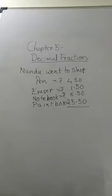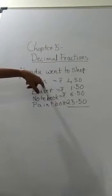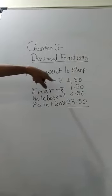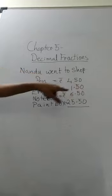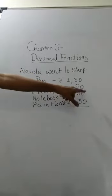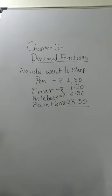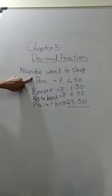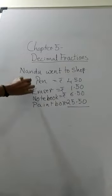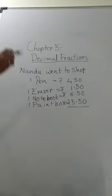So as an example, they have given that Nandu went to a shop. The pen price is 4.5 rupees, razor 1.5 rupees, notebook 6.5 rupees, and paint box 25.5 rupees. So Nandu is going to buy all these things — one pen, one razor, one notebook, and one paint box. So let us first see what is the total amount.